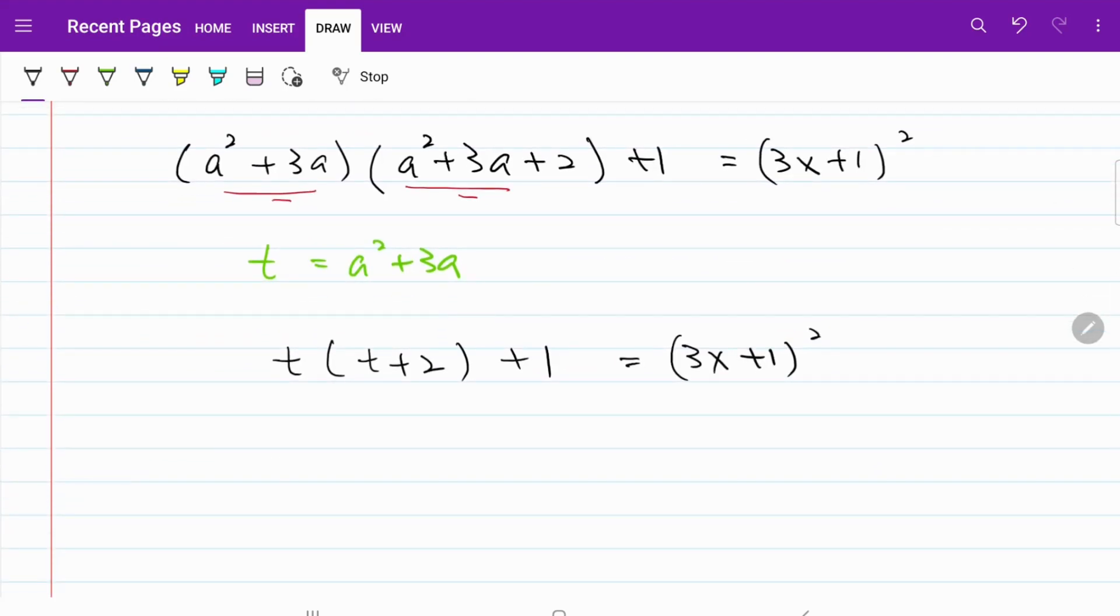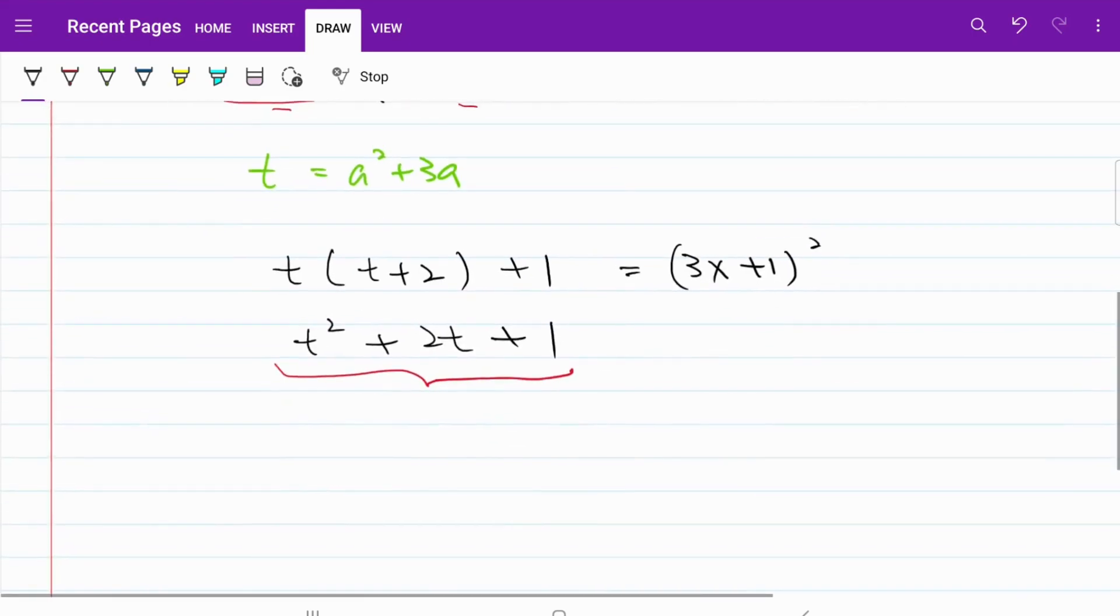If I open up the bracket on the left-hand side, I have t square plus 2t plus 1. I hope by now you can realize that this in itself can actually be turned into a perfect square in terms of t and 1, meaning I can turn this into t plus 1 bracket square is equal to 3x plus 1 square.